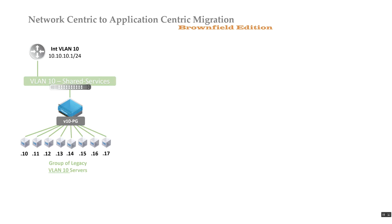On that VLAN 10 port group we have a number of legacy virtual machines, all grouped together. For this scenario I'm showing eight virtual machines, though customers certainly have more. I want to show how we would handle migrating these workloads into ACI.